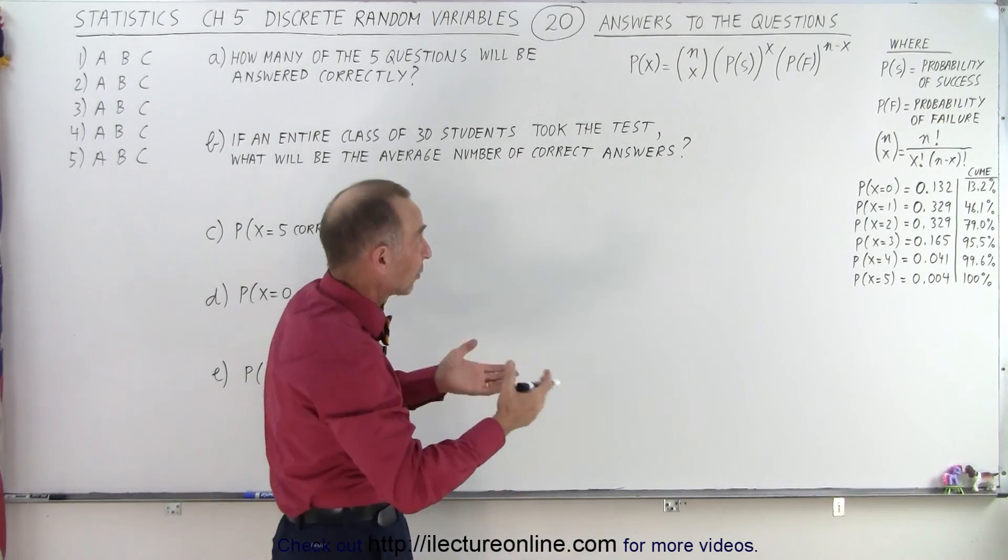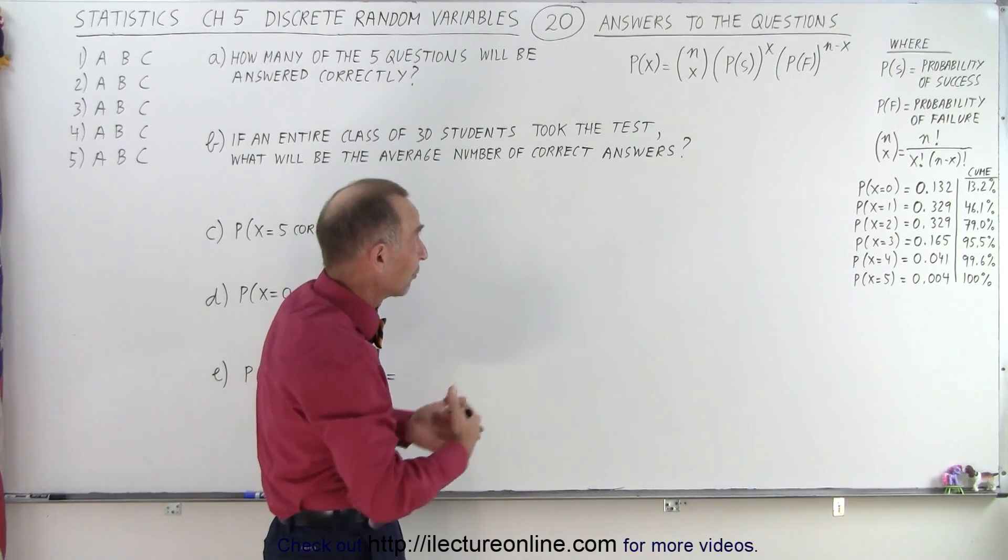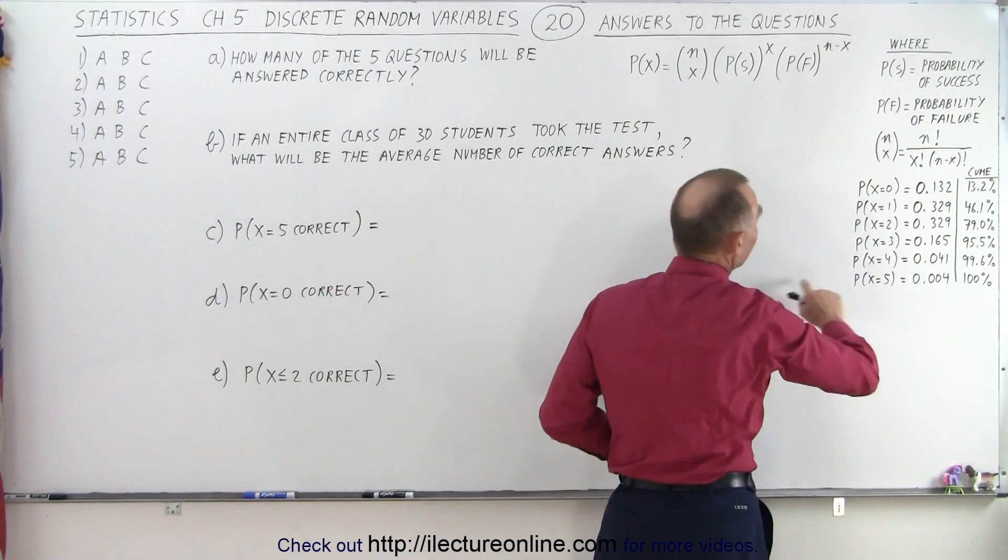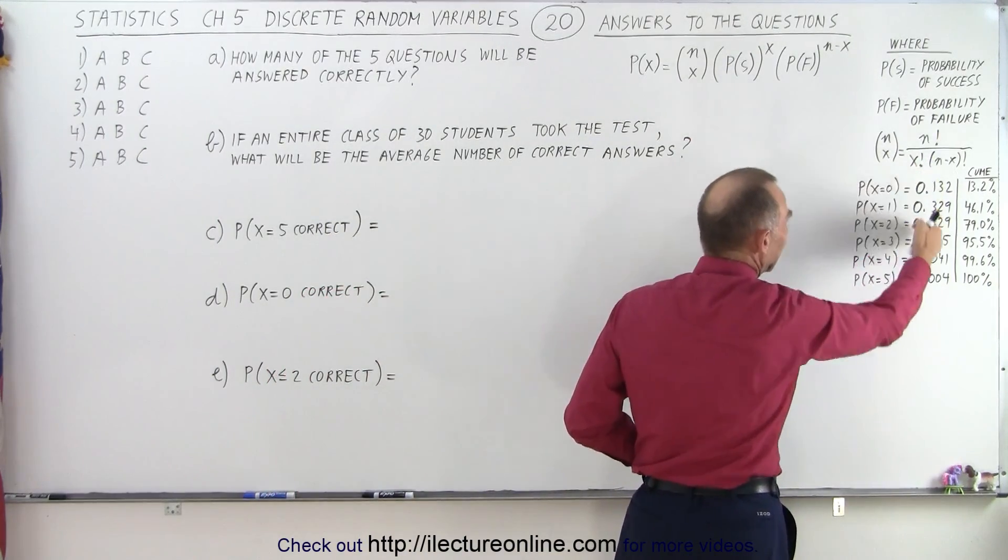And of course X is the number of correct questions. Could be 0, 1, 2, 3, 4, or 5. And this is how we were going to calculate it. We've done that before in a previous video. Here were the answers.